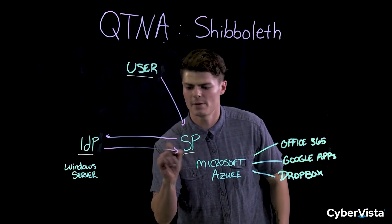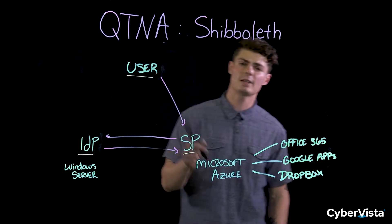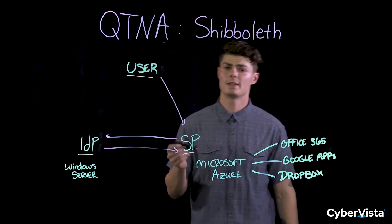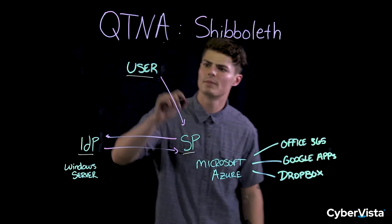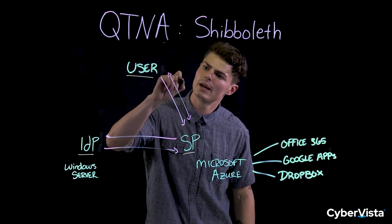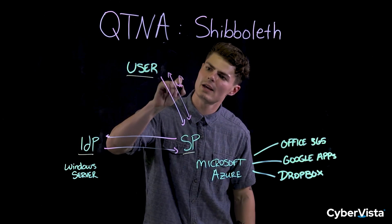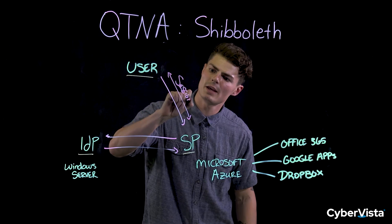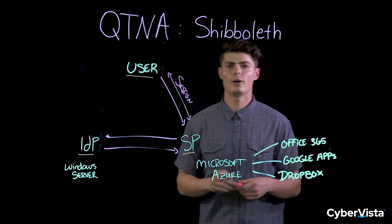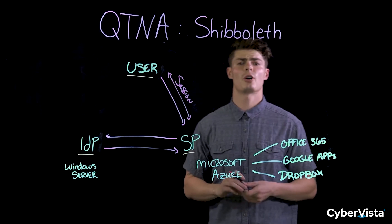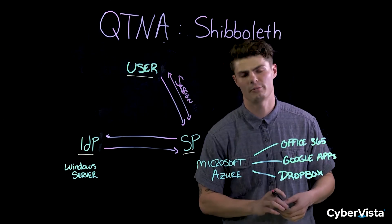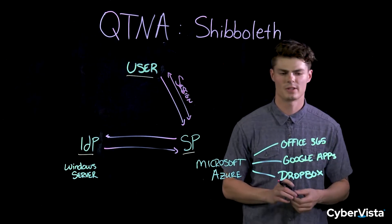It will then send a message back to the service provider saying if I'm good to go or not. In this case, I am. Once it validates, it creates a session between me and the service provider. Now I'm on Microsoft Azure's homepage, and I have access to all of these different protected resources.